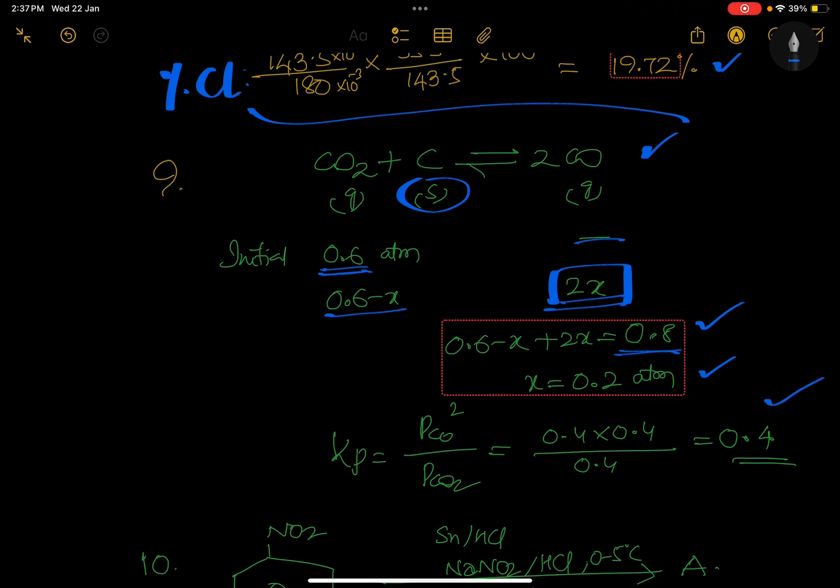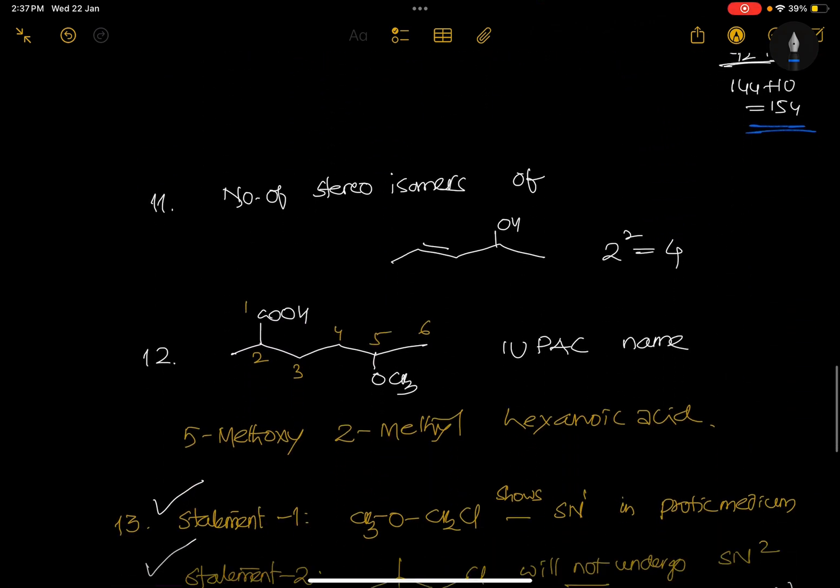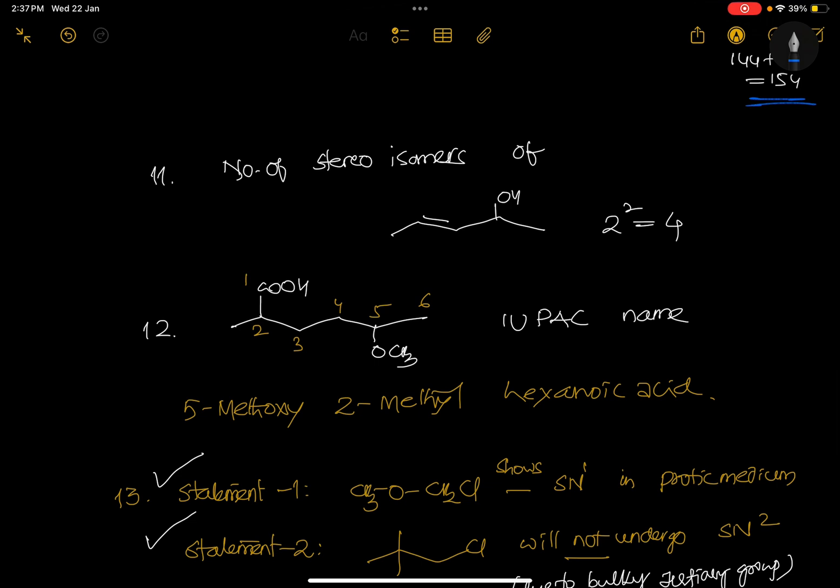When x equals 0.2, this will become 0.4, so 0.4 into 0.4 by 0.4 equals 0.4. Very, very simple numerical. Here, organic equations: nitrobenzene on reaction with Sn/HCl forms aniline, with NaNO2/HCl forms benzene diazonium chloride, with CuCl forms chlorobenzene, with sodium Fittig reaction forms biphenyl. Is asking what is the molecular weight of the compound A - that is 154. It's not crossing NCERT, be confident.